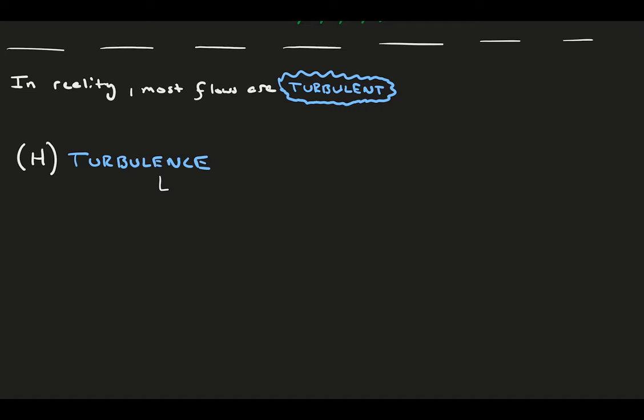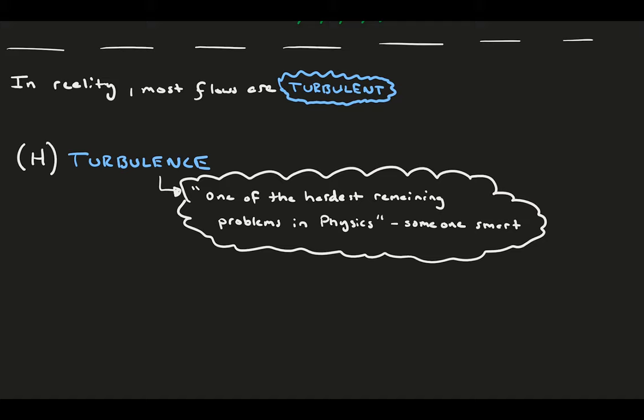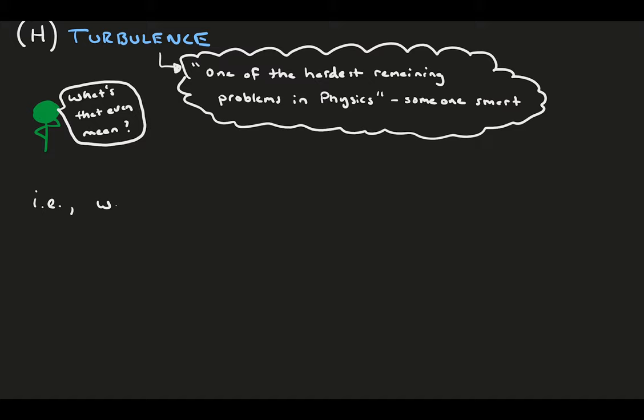It's often said that one of the hardest remaining problems in physics is turbulence. Unfortunately, statements like this are vague and only put turbulence into an intimidating category that scares off new researchers. What we should be saying is: yes, turbulence is hard, but it's because we don't have the tools yet to easily predict flow behavior or the forces produced. Finding these tools will be both challenging and exciting.